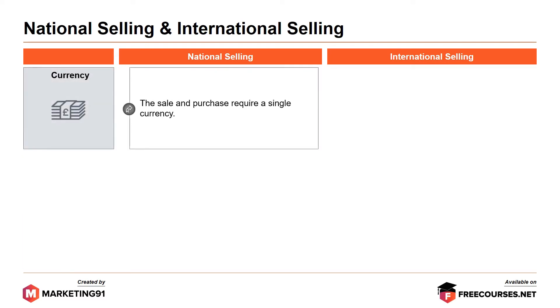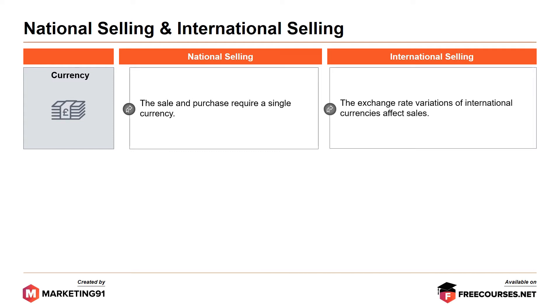Next, currency. The sale and purchase require a single currency in national selling. Whereas, in international selling, the exchange rate variations — or fluctuations — of international currencies affect sales.